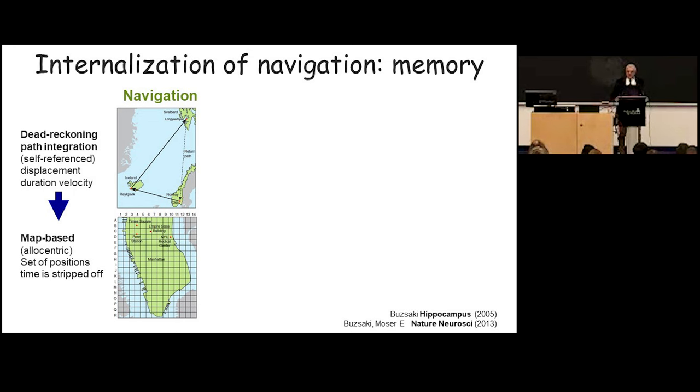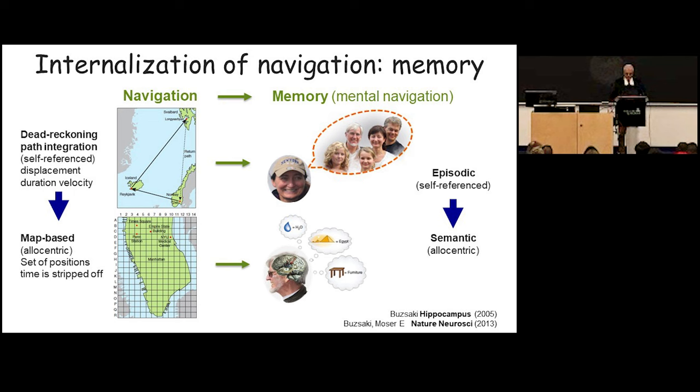So initially, the hippocampus has worked out a mechanism or nature worked out a mechanism that the animal can navigate with the help of the outside clues. At one point, it became so smart that you no longer need the outside world. And you can navigate internally. And that internal navigation is, of course, called mental travel. That was the term and beautiful phrase that was introduced by Endel Tulving, who just passed away a couple of weeks ago. And so this is mental travel. This is a disengagement from the world. You can go back to the past, and then we call it memory. You can go into the future, and we call it planning or imagination.